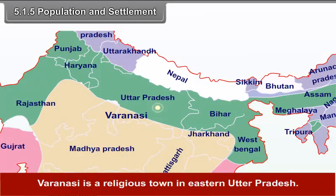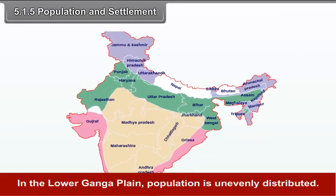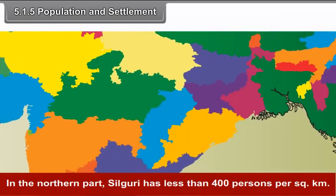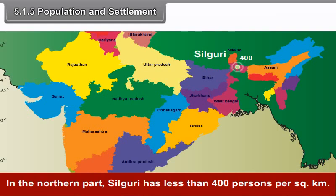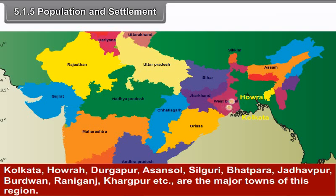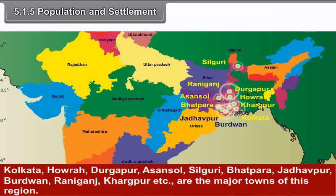Varanasi is a religious town in eastern Uttar Pradesh. In the Lower Ganga Plain, population is unevenly distributed. In the northern part, Siliguri has less than 400 persons per square kilometer. Near Kolkata and Howrah, population density is about 1000 persons per square kilometer. Kolkata, Howrah, Durgapur, Asansol, Siliguri, Bhatpara, Jadavpur, Burdwan, Raniganj, Kharagpur, etc. are the major towns of this region.